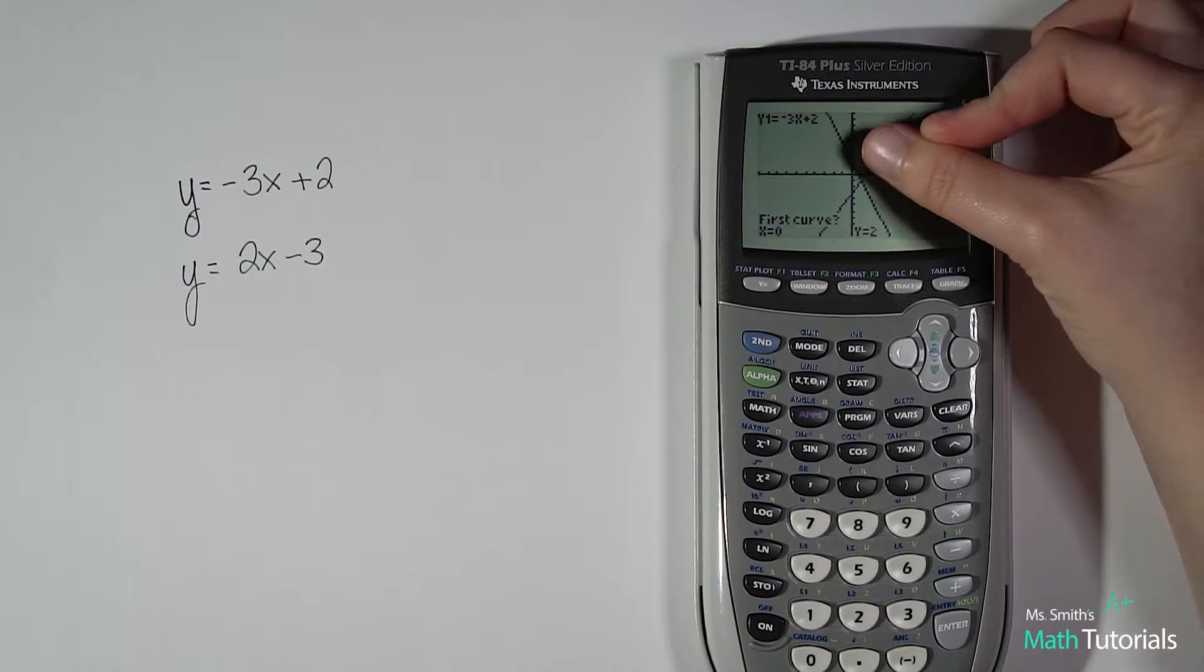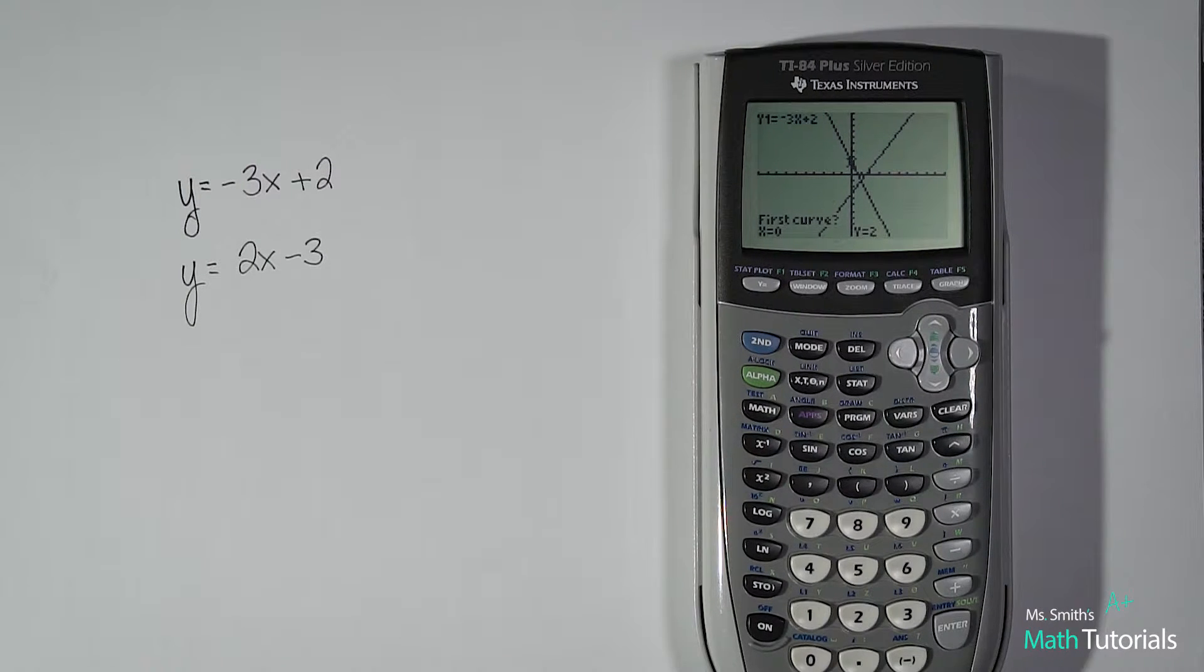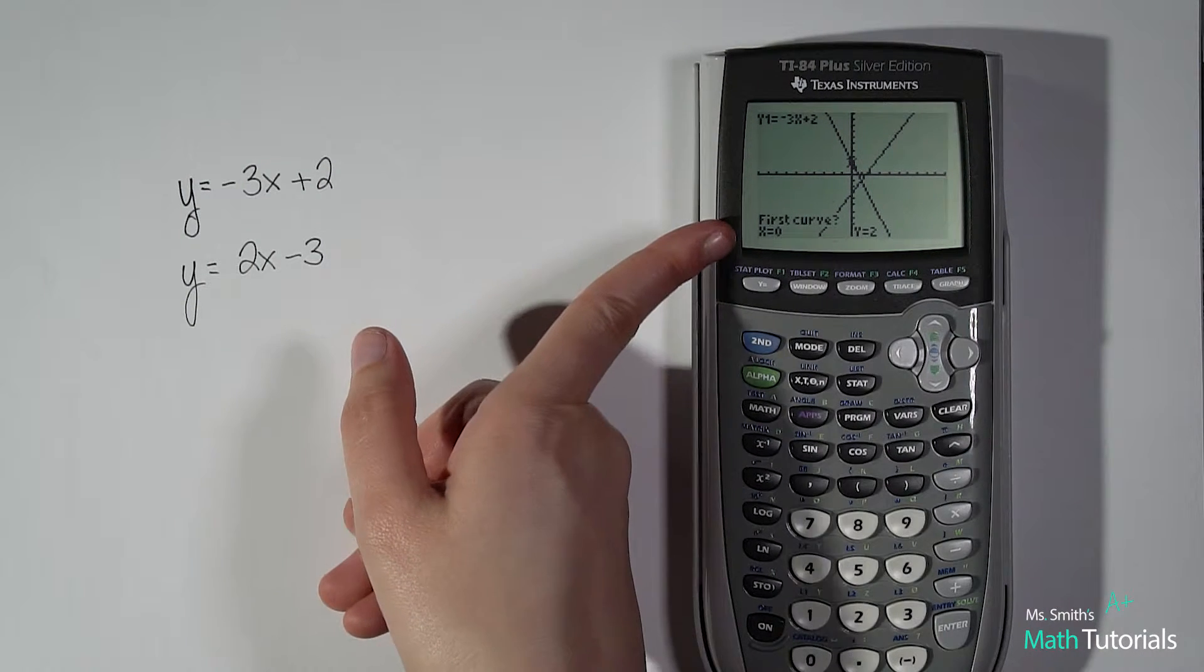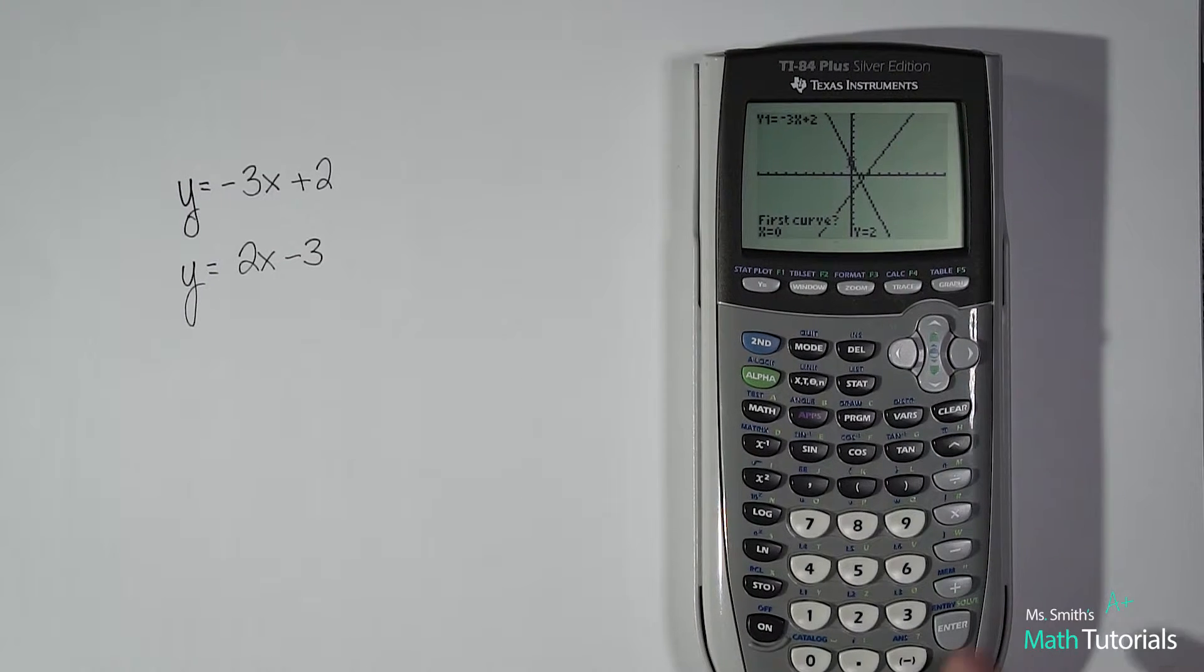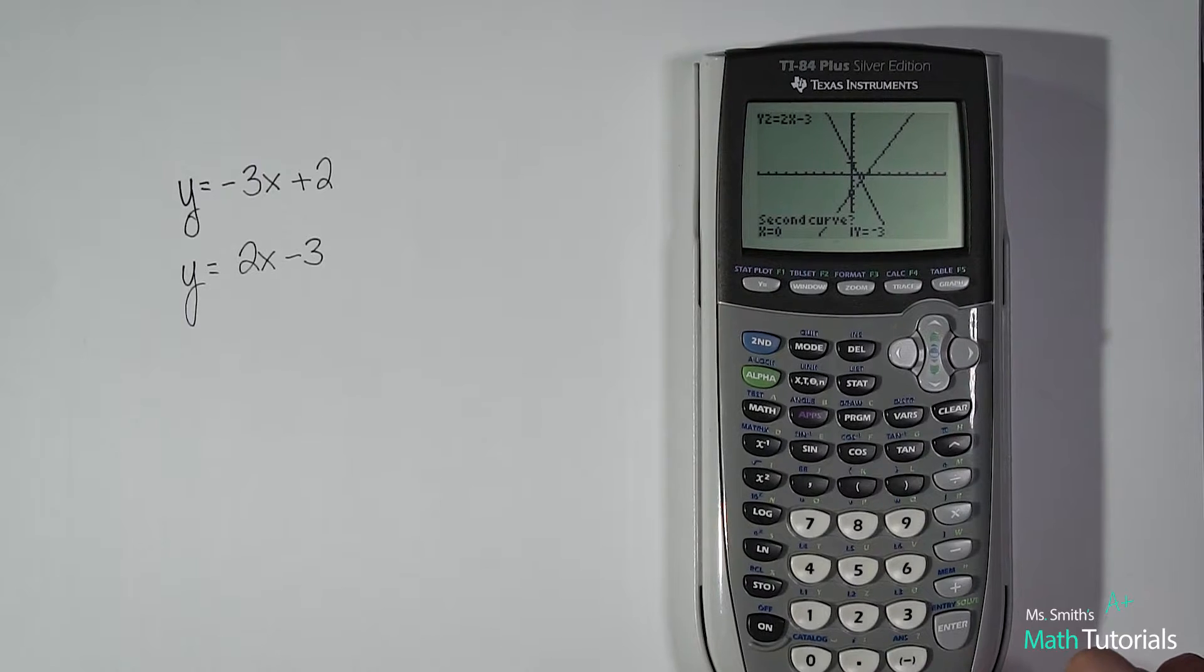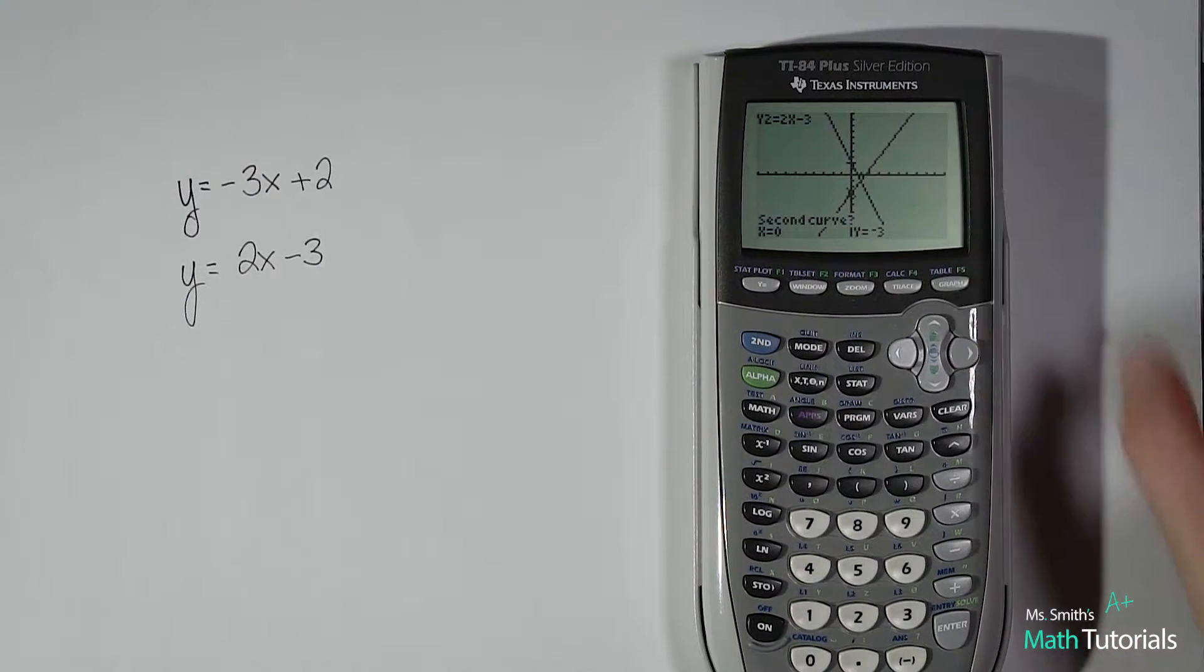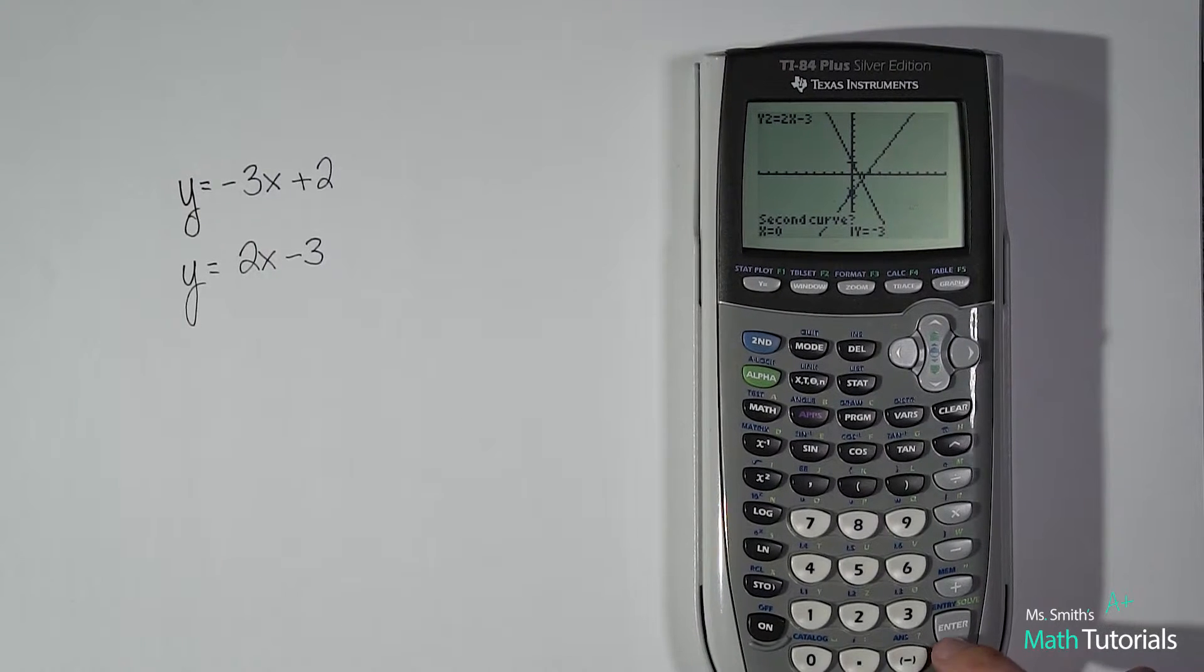You're gonna see a little spaceship show up. I call it a spaceship and it'll be on one of your lines and it'll say first curve. And what it means is the first line. So we're gonna hit enter to say yes that's the first line. And you'll see your spaceship jumps down to your second line. So it's down there now. And it says second curve. We're gonna confirm that by hitting enter again.